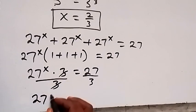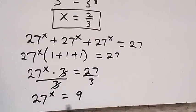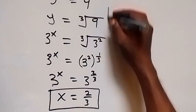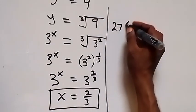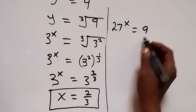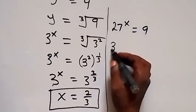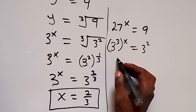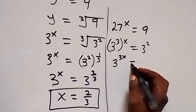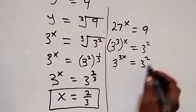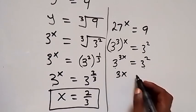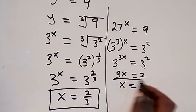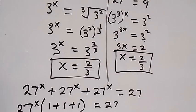This gives us 27 raised to power x equals 9. We can now change both sides to the same base. So 27 raised to power x equals 9 becomes 3 raised to power 3, raised to power x, equals 3 raised to power 2. Opening the bracket, we have 3 raised to power 3x equals 3 squared. With the same base, we equate the powers: 3x equals 2, so x equals 2 over 3.